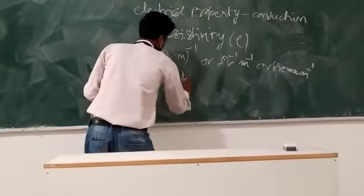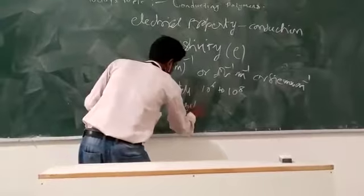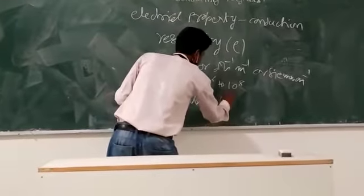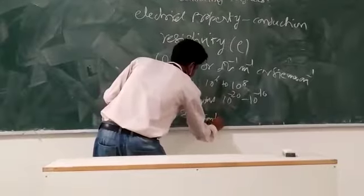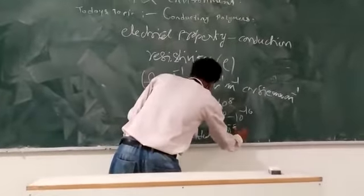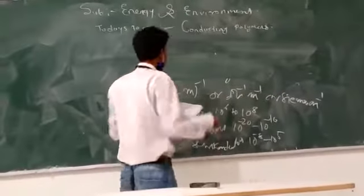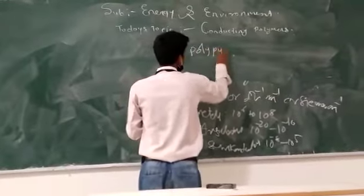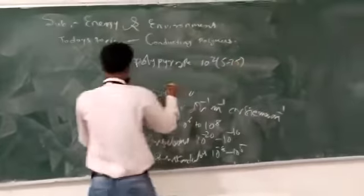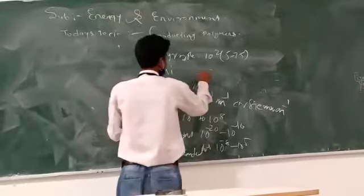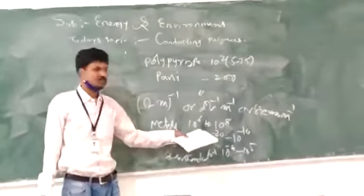Different materials have different conductivity ranges. For metals, the conductivity ranges from 10^6 to 10^8 siemens per meter.